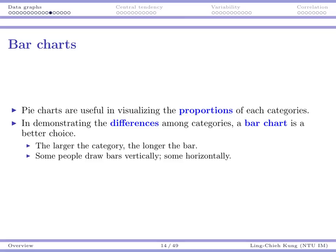What's the difference between them? A pie chart is very good for visualizing the proportions of each category. But when we want to demonstrate the differences among categories, a bar chart is better. As normal people, it may be hard for us to immediately distinguish two slices with very similar sizes in a pie chart — it's hard to tell which one is larger when the difference is small.